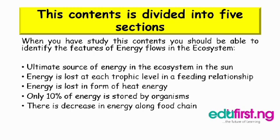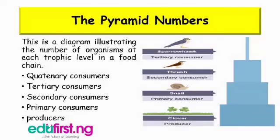So we're going to look at the pyramid of numbers. This is a diagram illustrating the number of organisms at each level in a food chain. We have the quaternary consumers, tertiary consumers, secondary consumers, primary consumers, and the producers.